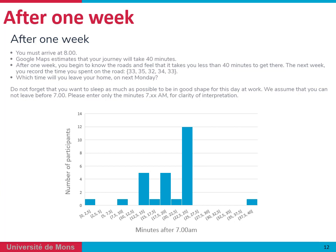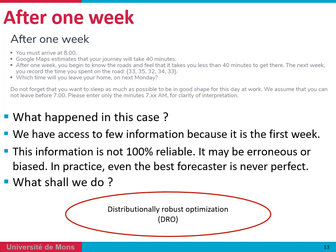Now, let's come back to the case with one-week observations. The problem is that with only one week of information, we have very little data and perhaps it is biased. We cannot be 100% reliant on it — it may be erroneous or biased. In practice, even if we try to forecast this data with the best forecaster, the results will never be perfect. So what shall we do? We can use distributionally robust optimization, which is especially designed for when the input data is misrepresented or biased.